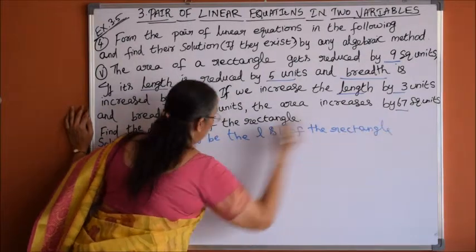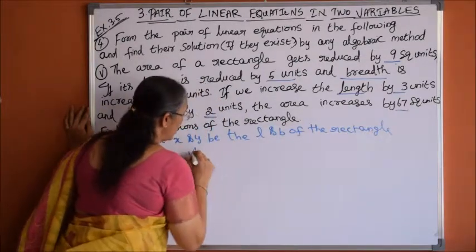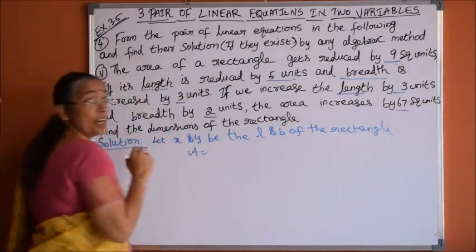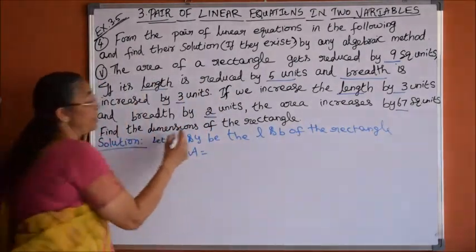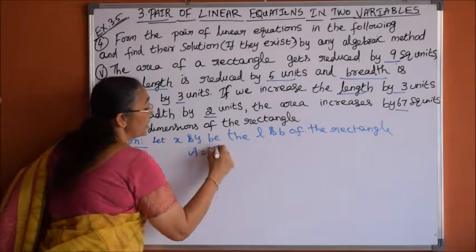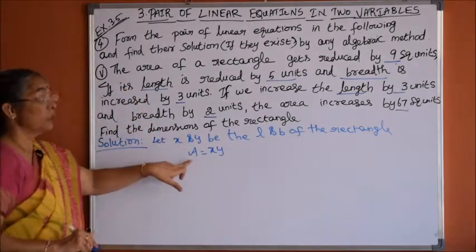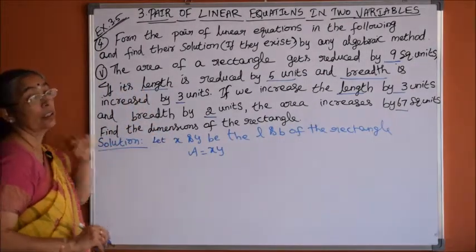So our area is the area of the rectangle L into b, so here x into y — this is the original area.